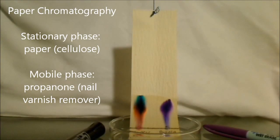The paper is the stationary phase, and the mobile phase in this case is propanone, which is nail varnish remover.